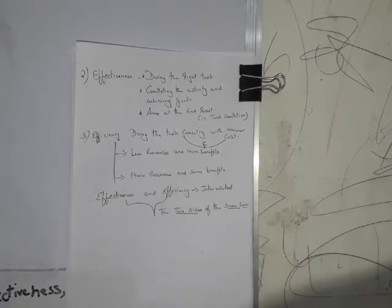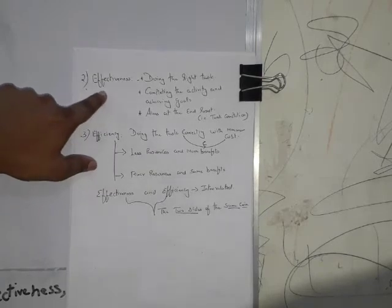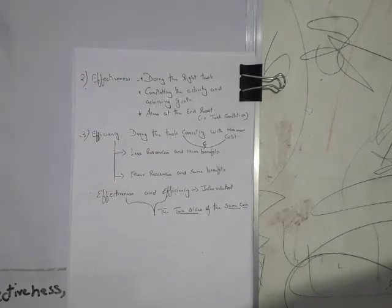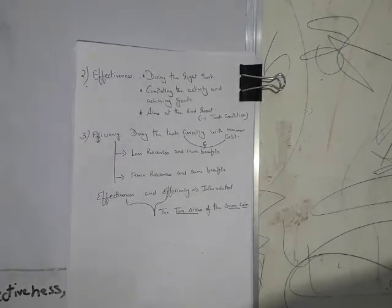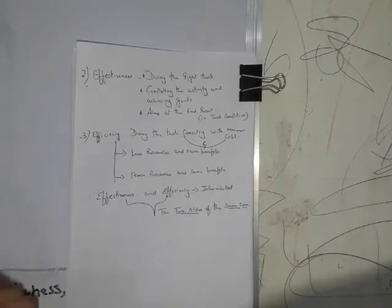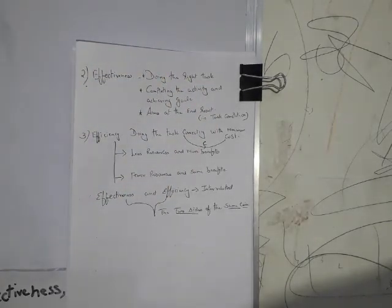So here, the manager in this case is effective, because we say effectiveness is nothing but doing the right task. But he is not efficient. He was not able to bring that particular production cost under his control, or he was not able to meet the minimum cost that was assigned by the management.